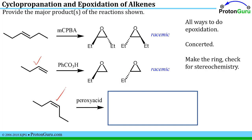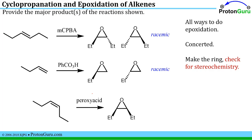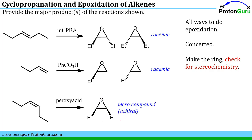Now we have a cis alkene reacted with a peroxy acid. We check for stereochemistry: we've generated two chiral centers, but unlike the first example, this molecule is symmetric because both groups point the same way. The definition of a meso compound is a compound that has stereocenters but is also symmetric, so this is a meso compound — which is achiral.